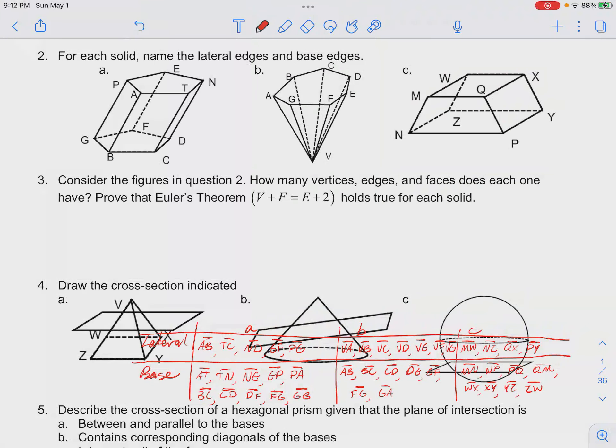Number three in your classwork for intro to 3D solids: we want to use the figures that we used in question 2 in order to prove that Euler's theorem is true. So for our first pentagonal oblique prism we have...